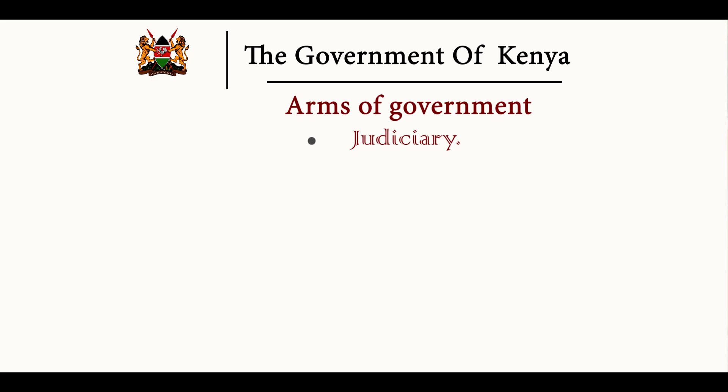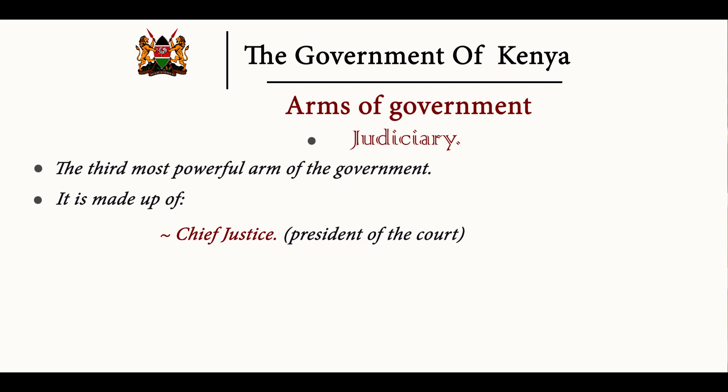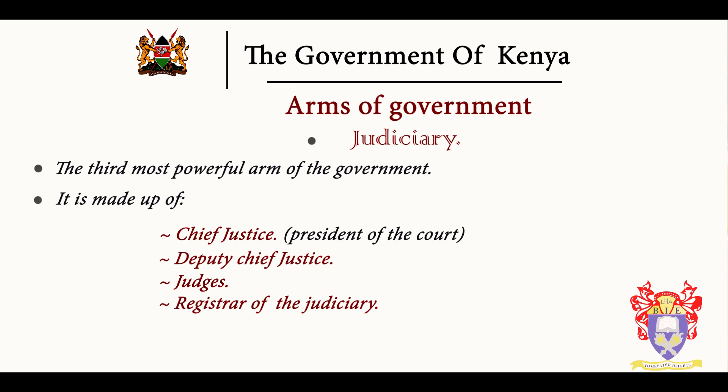Then we have the judiciary — the third most powerful arm of government. It is made up of the Chief Justice, who is the president of the courts, the Deputy Chief Justice, five judges of the Supreme Court, and any other judges of the superior courts. Apart from judges, we also have the Registrar of the Judiciary, and magistrates who hear cases at magistrate law courts, which are called subordinate courts.